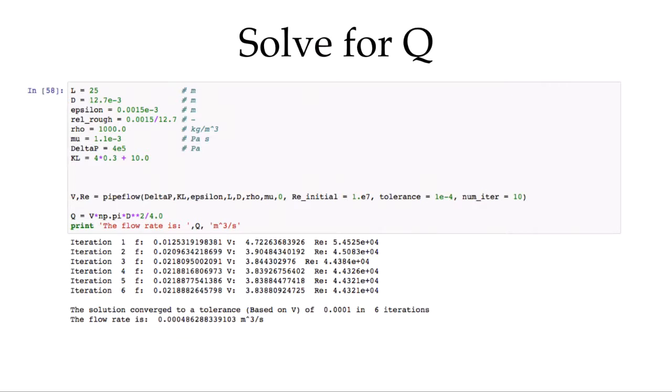So that's how we solve for a pipe flow in a single pipe with a single diameter with both major and minor losses. We'll continue with some more complicated examples where we have changes in diameter in the pipe as well in a subsequent video.